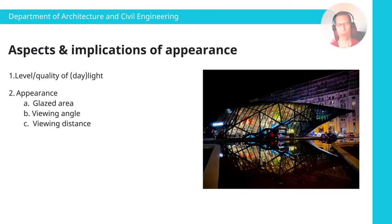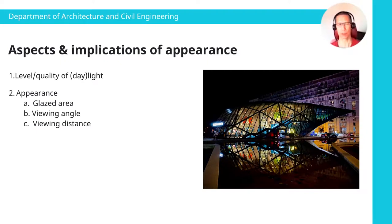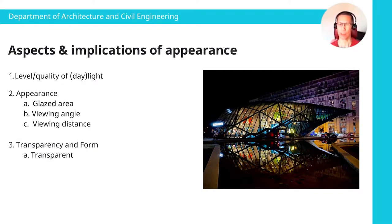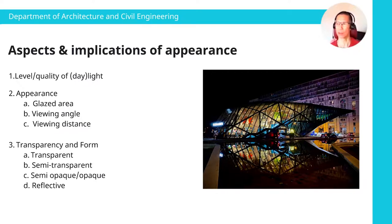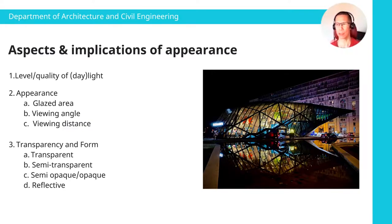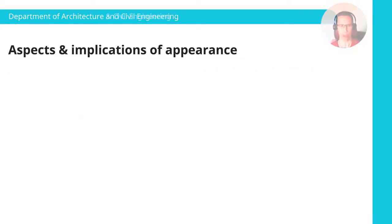I'll talk about different types of transparency and forms. As we go from more transparent to less transparent, the form becomes much more important. Transparent buildings, or highly transparent buildings, tend not to have as distinct a form, whereas less transparent buildings have a much more solid appearing form.